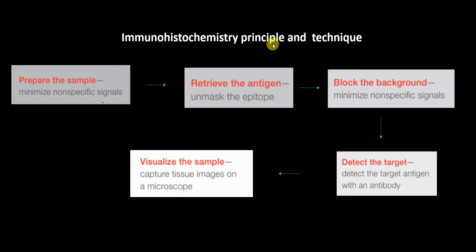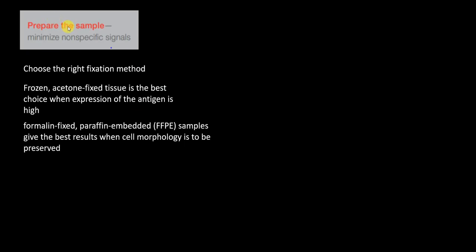So the immunohistochemistry technique involves: preparation of the sample, followed by antigen retrieval, blocking of the background, detection of the target antigen, and finally visualization. Having given this overview, I will now discuss each step in depth.